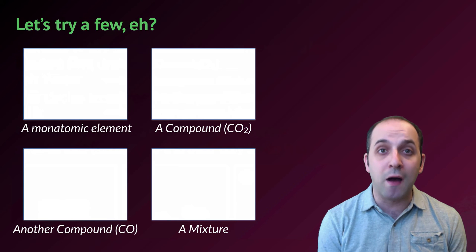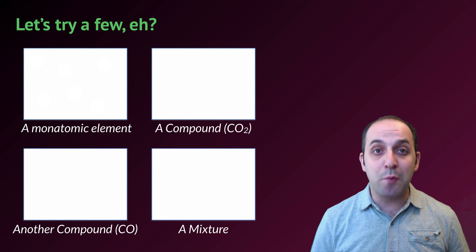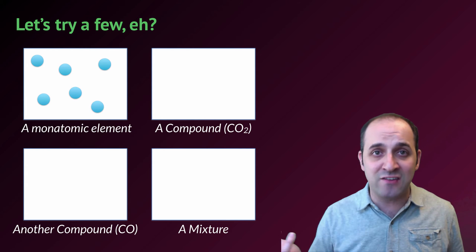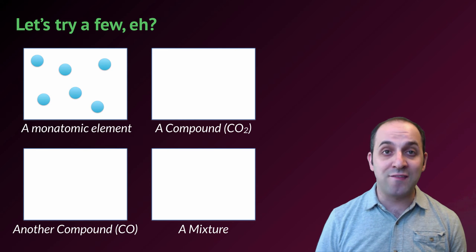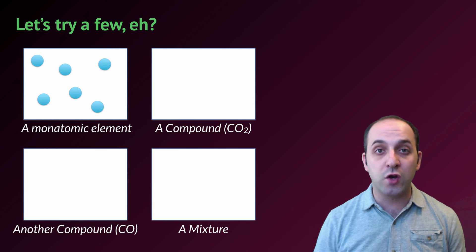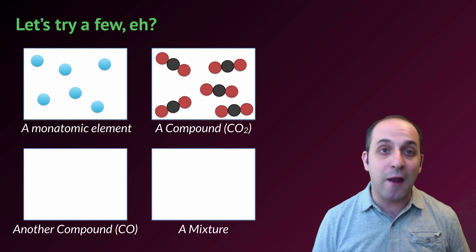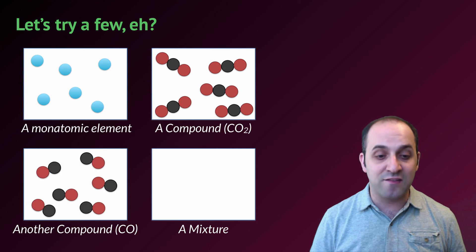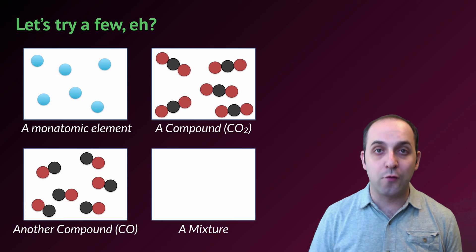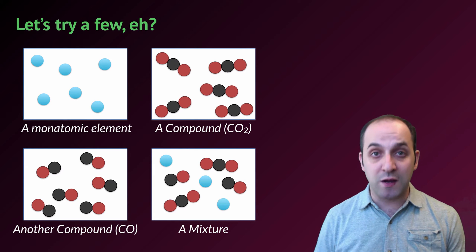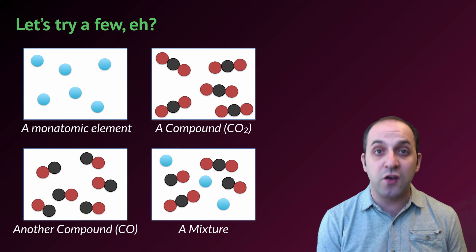A monatomic element is a sample where particles are made of one atom — I represented it like this in the gas phase, though the phase doesn't really matter. A compound like CO₂ needs to represent carbon and oxygen as separate types with the relationship of one carbon to two oxygens shown connected. Here's CO, where the ratio is one carbon to one oxygen. Finally, putting everything together makes a mixture, so we can see how all components are arranged in a particle diagram.